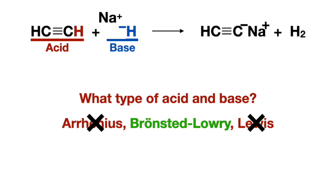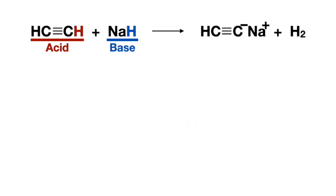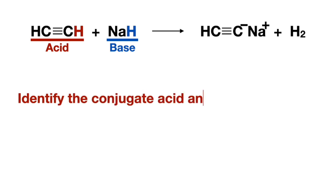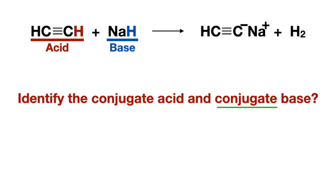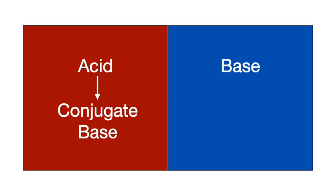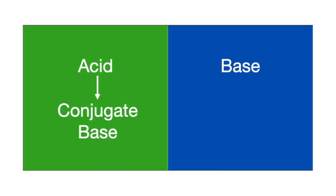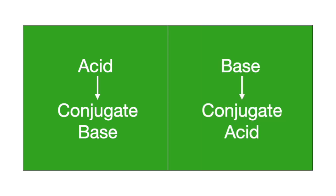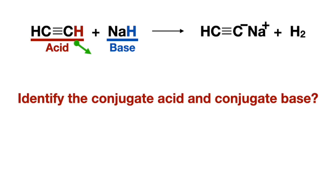Now we're asked to identify the conjugate acid and the conjugate base. Conjugates are what happens to an acid and a base after they react, so the answer must come from the product side. After an acid reacts it becomes a conjugate base, and after a base reacts it becomes a conjugate acid.